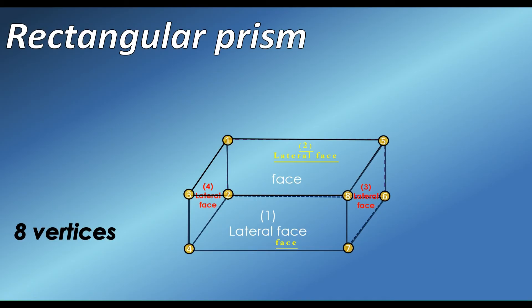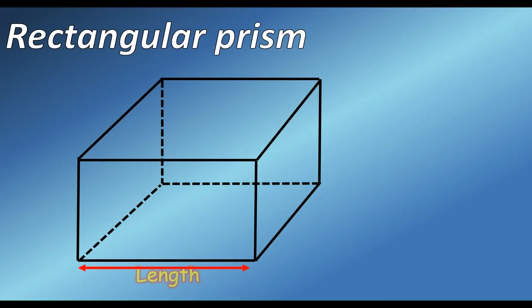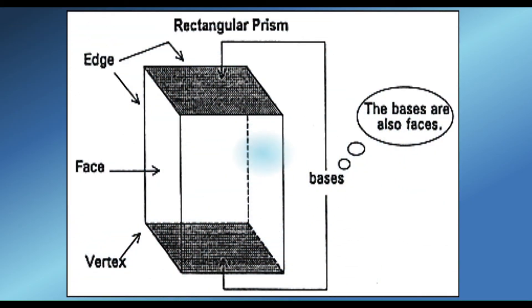Rectangular prism's three-dimensional parts, namely length, width, and height. Take note, the bases of rectangular prism are also faces.